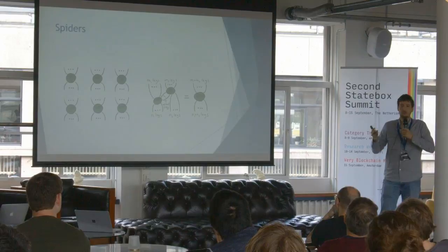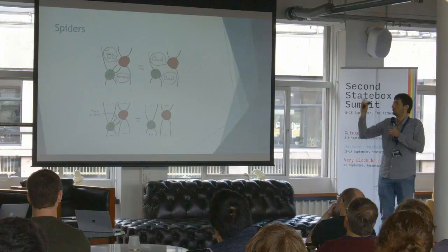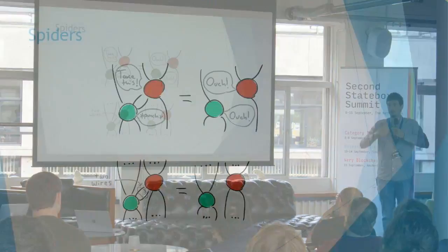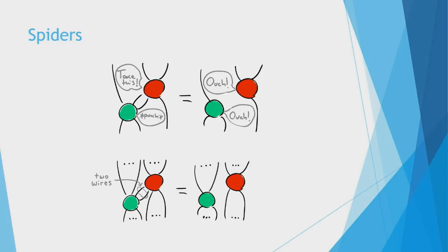And you can also introduce more than one color — you can have green spiders and red spiders. That's how the presentation of this particular language traditionally goes. What they do is they are not compatible in the same way as spiders of the same color — they are incompatible. So whenever they share at least two legs, they just drop the legs. They wrestle and the legs fall off. And these two equations are the only things you really need in order to do the teleportation protocol. In fact, you can just get by with fusion.